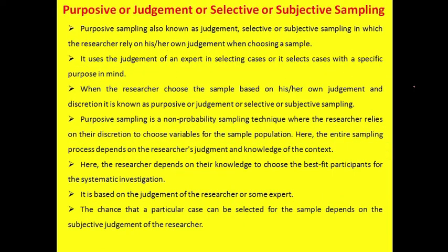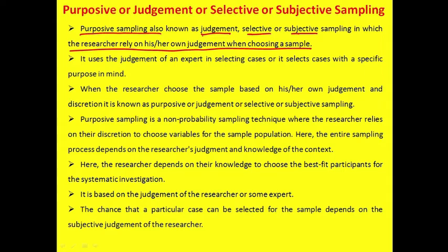Now we move to purposive, judgment, selective, or subjective sampling. In purposive sampling, the researcher relies on their own judgment when choosing a sample — selecting participants according to the objectives of the study. It uses the judgment of an expert in selecting cases with a specific purpose in mind.